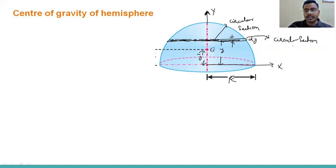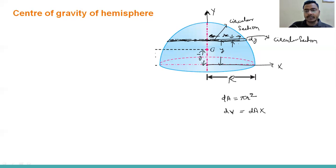The area for the circle is pi into r-square. Suppose the radius of this circular segment, cut at a y-distance from the x-axis, is small r. So the area is pi into r-square, and the small volume dV equals area into thickness, which is pi r-square into dy.